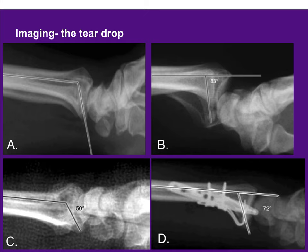On the lateral view, we also want to look at the teardrop, as described by Madoff. An increase in the teardrop angle indicates that a volar ulnar corner fracture has occurred and that the carpus may be subluxating palmarly. A decrease in the angle indicates dorsal angulation.